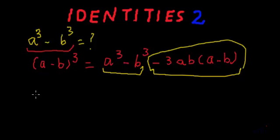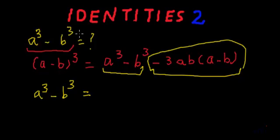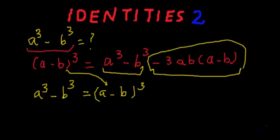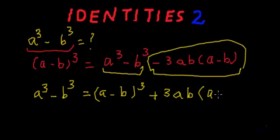So let me first write a cube minus b cube, which will be equal to — if we add 3ab multiplied by a minus b to both sides, we will get a minus b whole cube plus 3ab multiplied by a minus b.